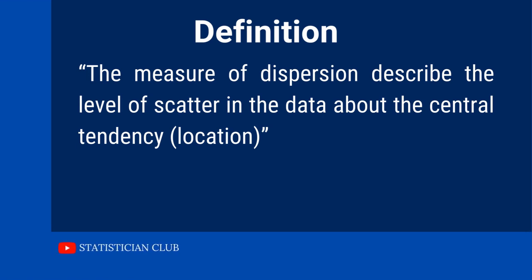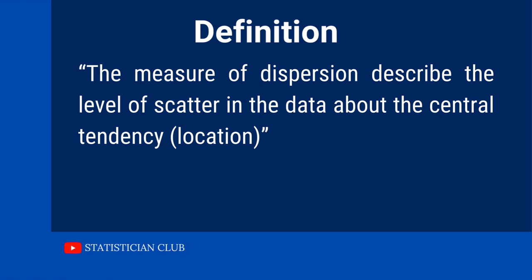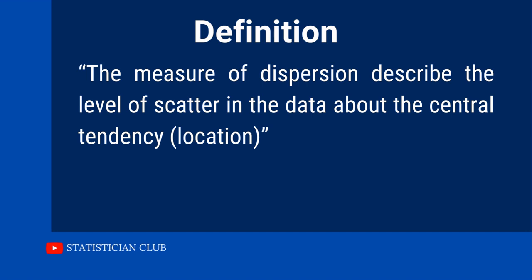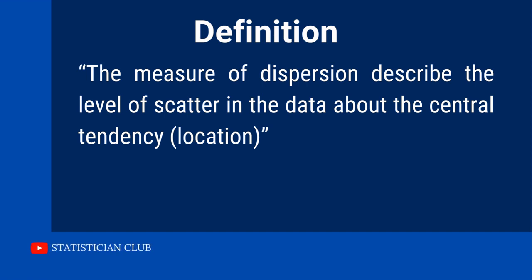As you know, measure of central tendency — or average, or measure of location — tells you about a single value of the data, which is the average. But when you want to know the difference between each observation, or to check the variation or scatteredness of each data point, then you need measure of dispersion.